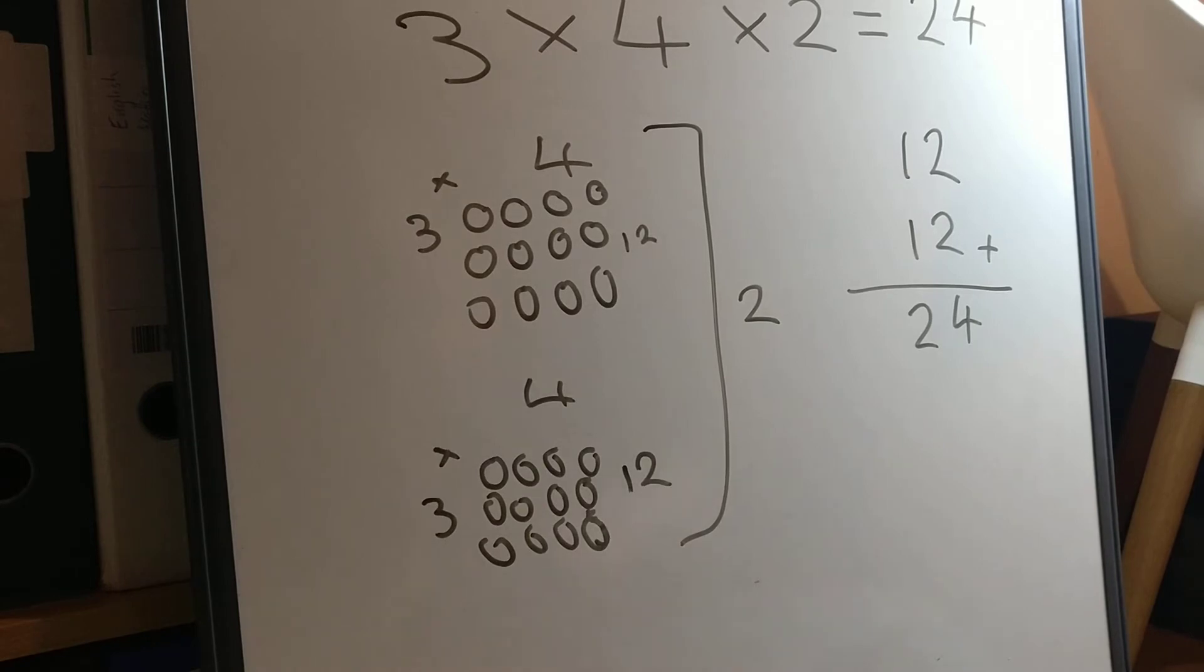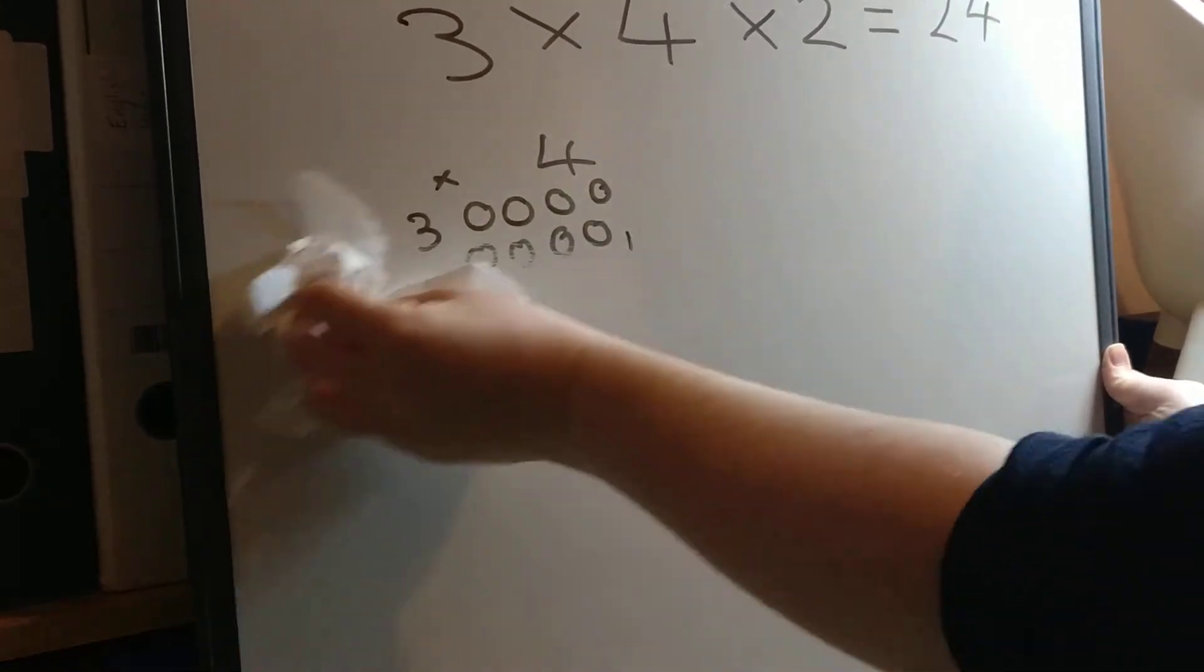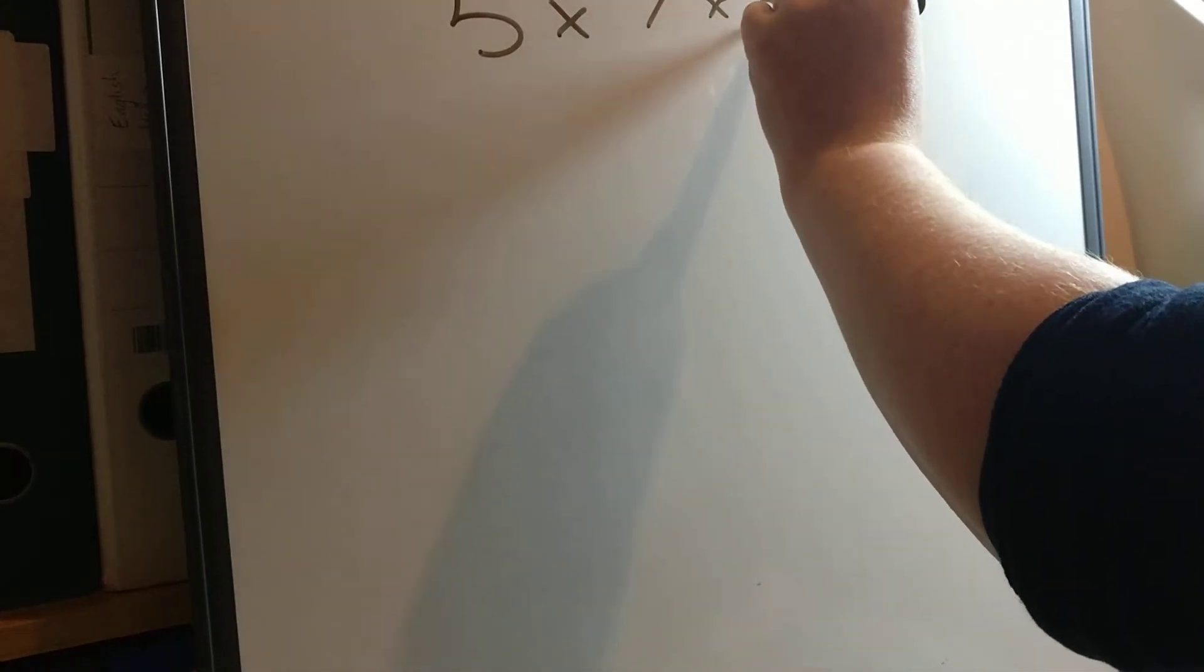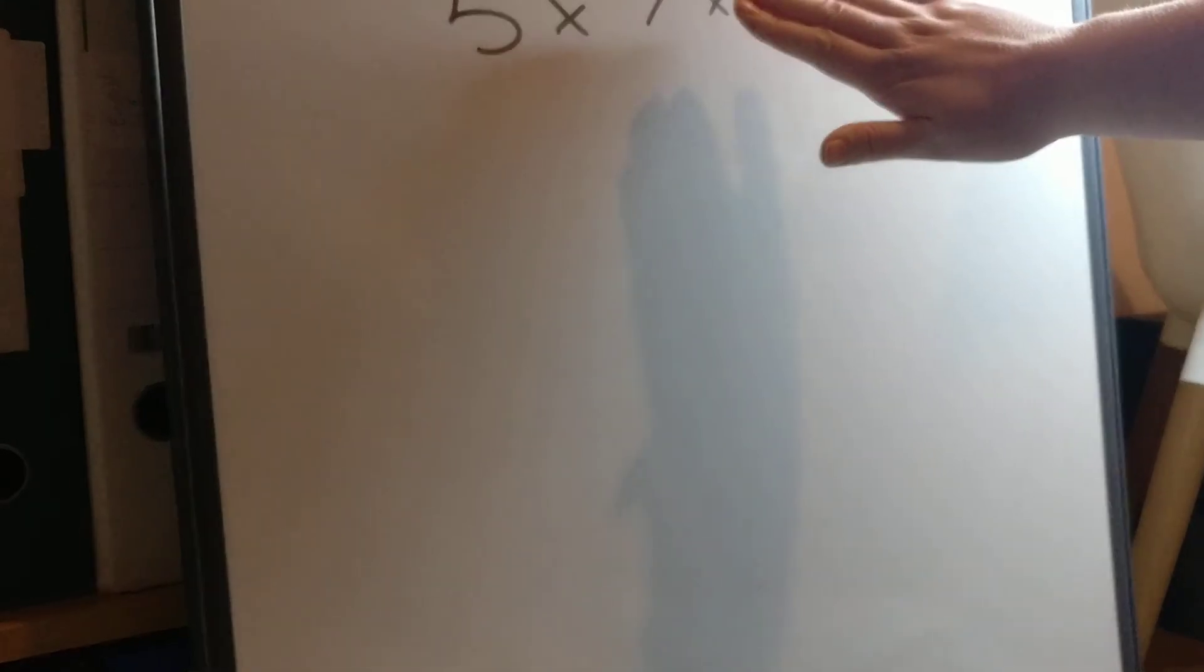That was a bit of an easy one. So let's try something a little trickier this time. Because we're really confident with our three, our four and our two times table. So let's have a look at something with maybe the seven times table in it to give us a bit of a challenge. So how about 5 times 7 times 3? Okay. Again, a question like this can look a little bit intimidating. So break it down into easy steps.